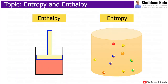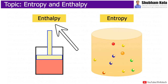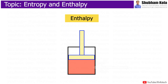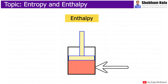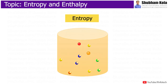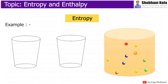In this video, we are going to learn about what is Entropy and Enthalpy in a thermodynamic system. Enthalpy is represented as the total heat contained in the system where pressure is constant, and entropy is the degree of disorder or the measurement of randomness of molecules.